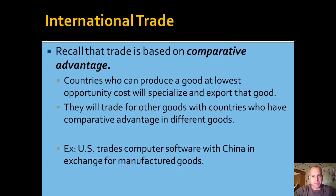Recall that trade is based on comparative advantage. From earlier in the course we learned about the sources of comparative advantage and the notion that economies, firms, and individuals should specialize in producing the things where they have a comparative advantage. In the context of countries and international trade, the countries who can produce a good at the lowest opportunity cost will specialize and export that good.